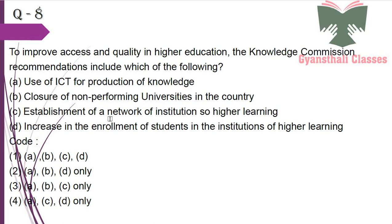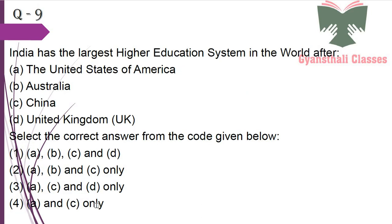Next question: To improve access and equality in higher education, the Knowledge Commission recommendations include: use of ICT for production of knowledge — yes; closure of non-performing universities — no; establishment of a network of institutions of higher learning — yes; increase in enrollment of students — yes. So the answer is A, C and D. B is not included.